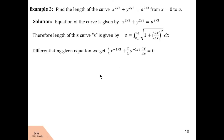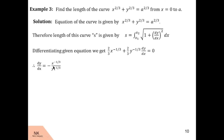To find dy/dx we differentiate with respect to x. After differentiation: (2/3)x^(-1/3) + (2/3)y^(-1/3) · dy/dx = 0. Dividing throughout by 2/3: x^(-1/3) + y^(-1/3) · dy/dx = 0. Taking x^(-1/3) to the other side and dividing by y^(-1/3), we get dy/dx = −x^(-1/3) / y^(-1/3), which can be written as −y^(1/3) / x^(1/3).